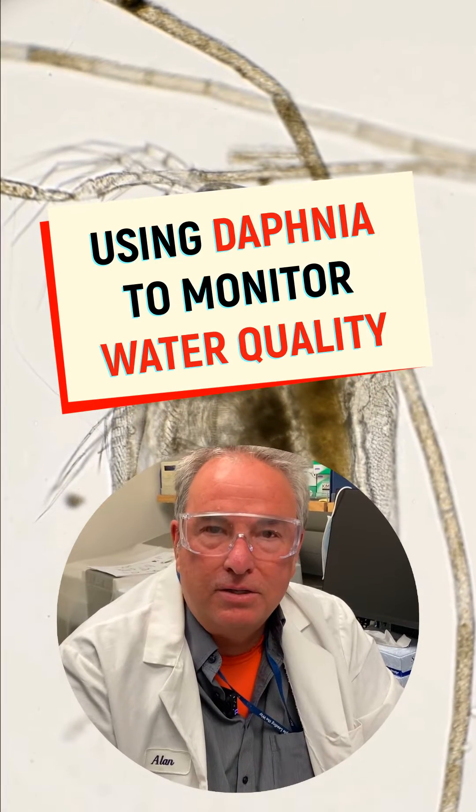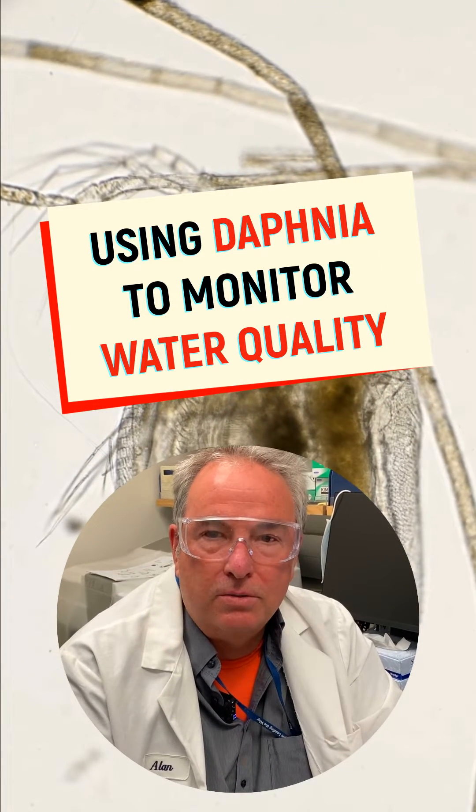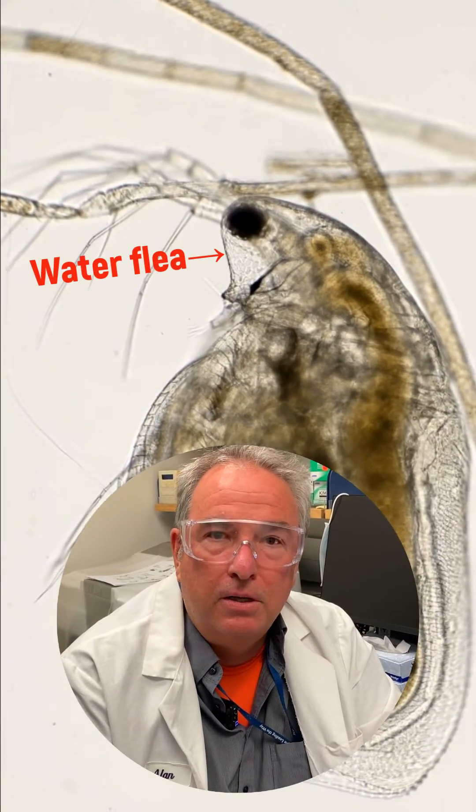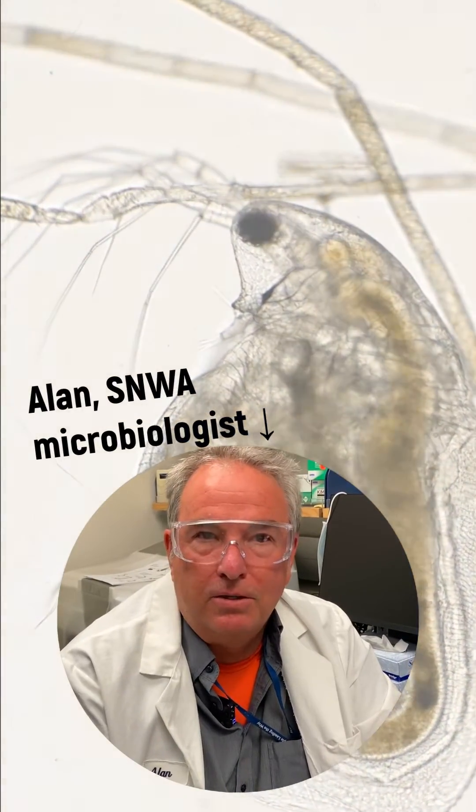Today we're talking about a unique analysis that uses an organism known as Daphnia magna, or what people may know as water fleas, to test for potential contamination of water.